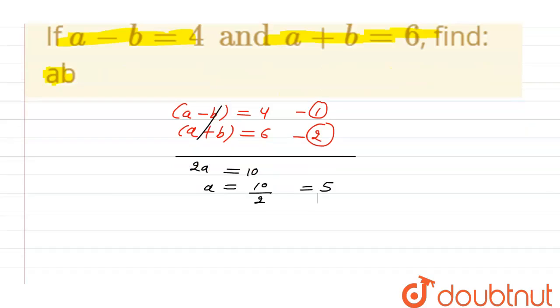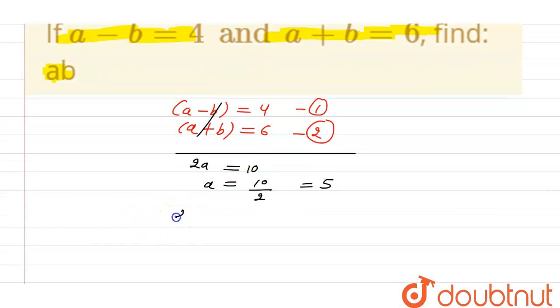Now we can put the value of a in first equation. So from one, we will get a minus b equal to 4. a is 5 minus b equal to 4, so 5 minus 4 is equal to b. The value of b is equal to 1 here.